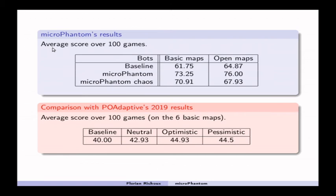So, it's interesting to compare these results with the PO Adaptive 2019 results, also against baseline, but with PO Adaptive using a neutral, optimistic, or a pessimistic phi function. Only on six basic maps, and there are no chaotic environments at that time.